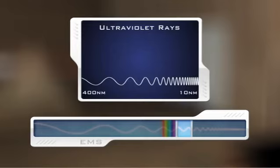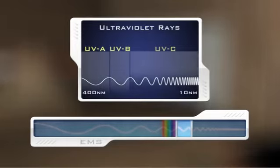These ultraviolet rays, or UV radiation, vary in wavelength from 400 nanometers to 10 nanometers and can be subdivided into three regions: UVA, UVB, and UVC.